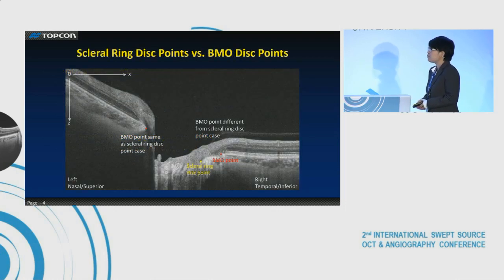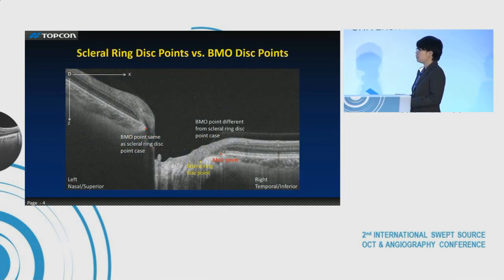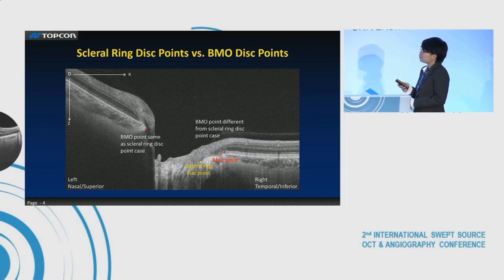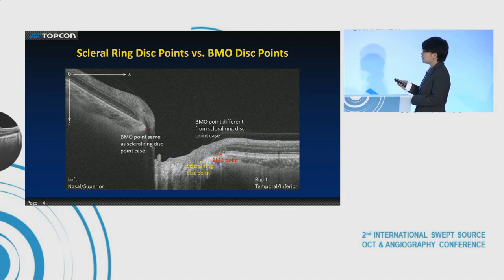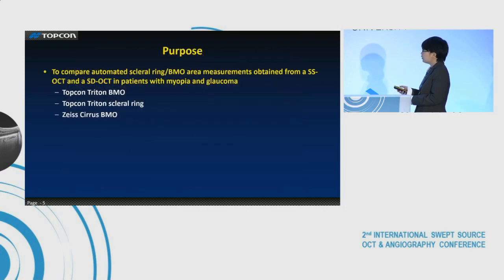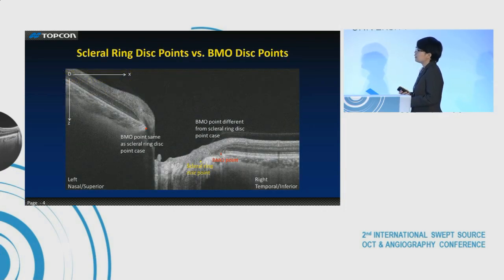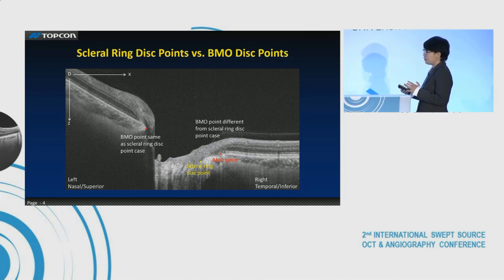Here's the image illustration of the BMO point and the scleral ring disk point. On the left part, the BMO disk point is the same as the scleral ring point. On the right part, because of the existence of border tissue, the BMO point is different from the scleral ring point. As a result, the BMO area is larger than the scleral ring disk area.